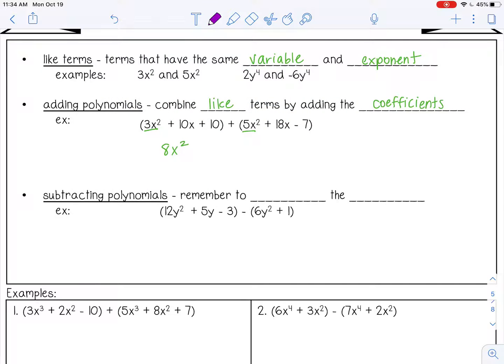Next I have 10x and 18x. Those are like terms. So I can add 10 and 18, which is 28. So positive 28x. And then last, you want to add your constants. So 10 plus negative 7, that would be a positive 3. So that is the sum of those two polynomials.